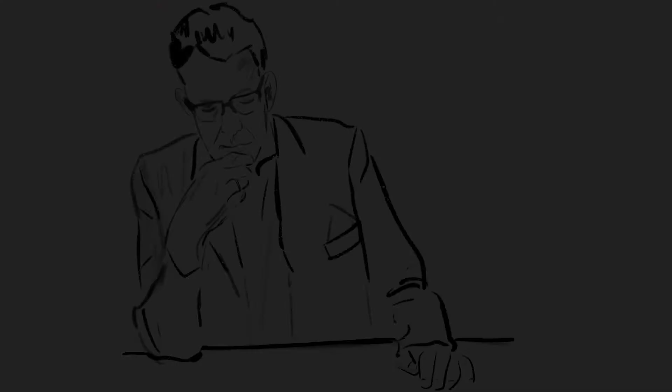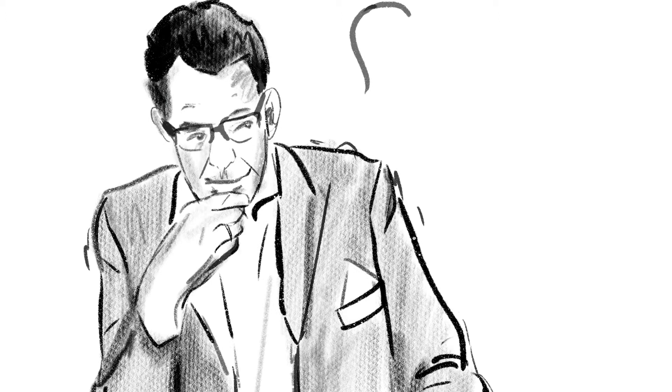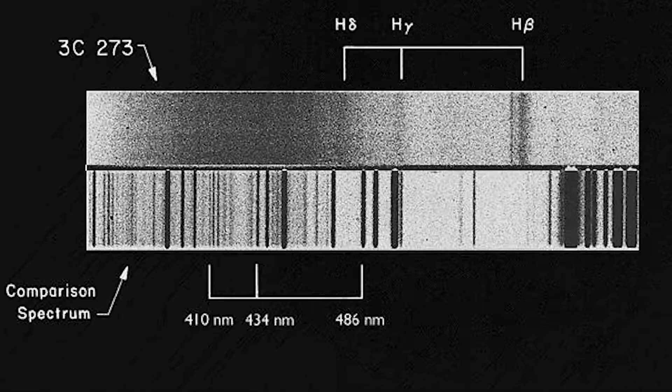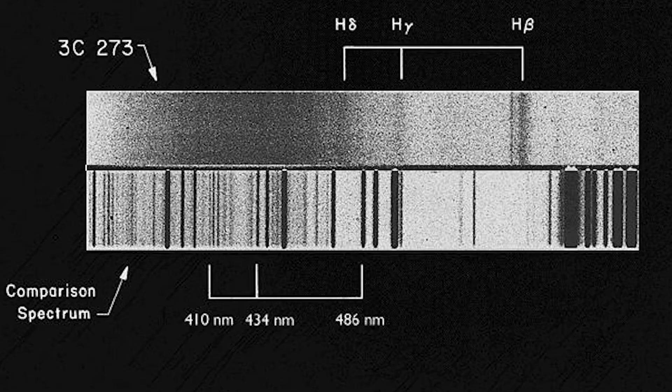It was in 1963, when a Dutch-American astronomer, Martin Schmidt, sitting in his office at Caltech, had a remarkable realization that we are in fact looking at the spectral signature of hydrogen. It just had been shifted to the red end of the spectrum due to the expansion of the universe.